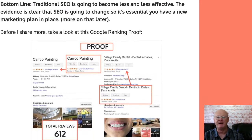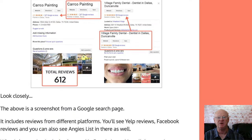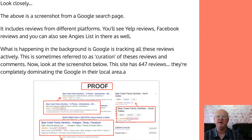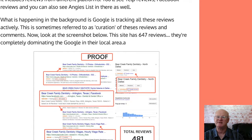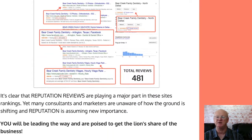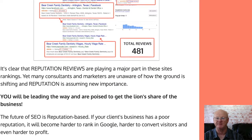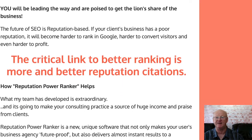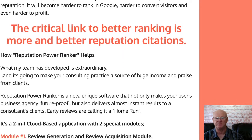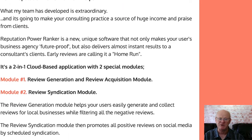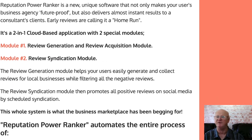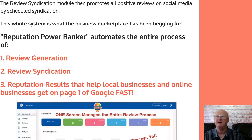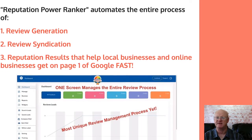Reputation Power Ranker is a software you can use for your business and it is going to give almost instant tangible results to your users and clients. It is a two-in-one cloud-based application with two modules: the first being Review Generation and Review Acquisition, and the second being Review Syndication.